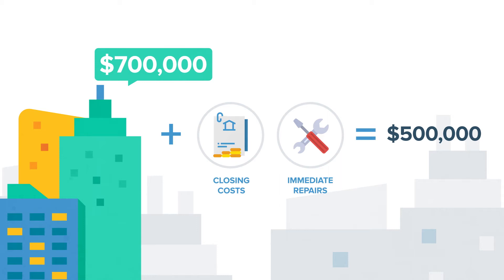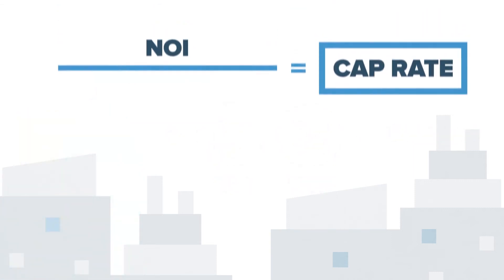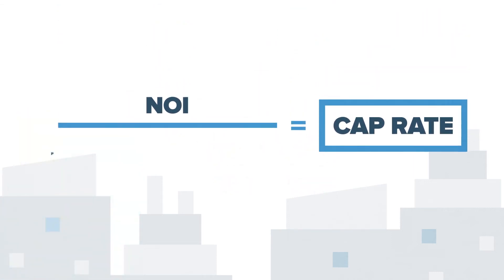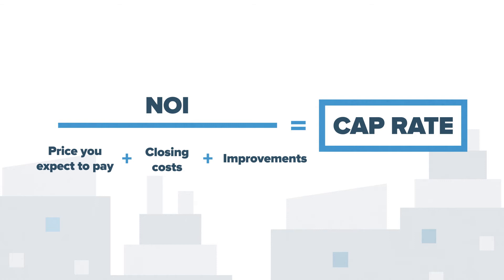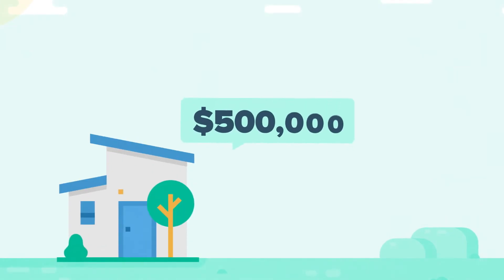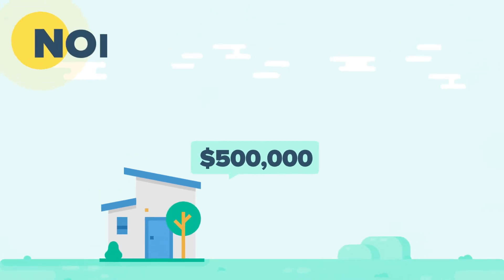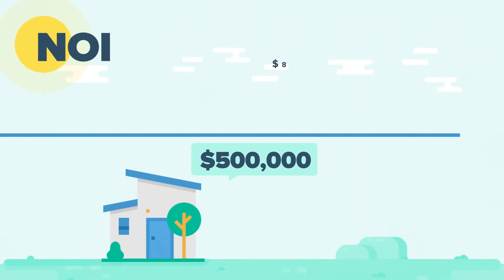Ultimately, the most useful way to calculate the cap rate is by starting with the price you expect to pay for the property, plus any additional costs required to close, plus any improvements needed to make the property functional — and yes, that means factoring the rehab into the total cost. Suppose you're able to buy a small apartment building all-in for $500,000. After doing your research and crunching the numbers, you determine that the net operating income for one year will be as follows: $80,000 in annual gross potential rent.